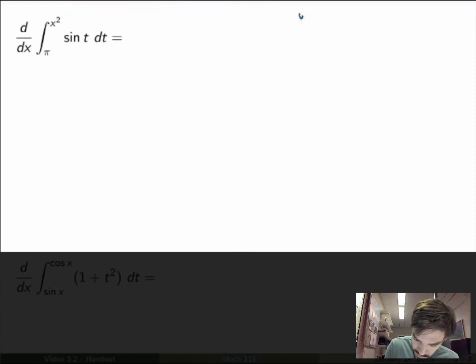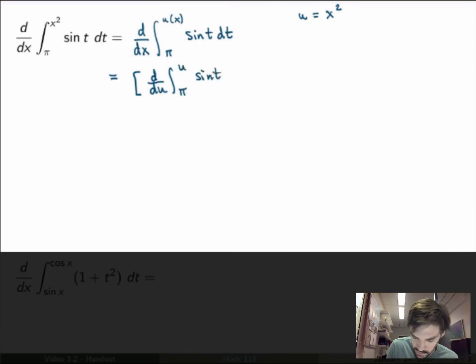So what I'll do is define the function u is equal to x squared. To make it explicit, this becomes now d/dx of the integral between pi and u(x) of sin(t)dt. This is a function of a function, so I'm using the chain rule. First find the derivative of the outer function, so this is d/du of the integral between pi and u of sin(t)dt, times the derivative of the inner function, which is du/dx.